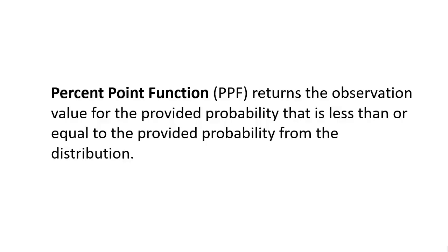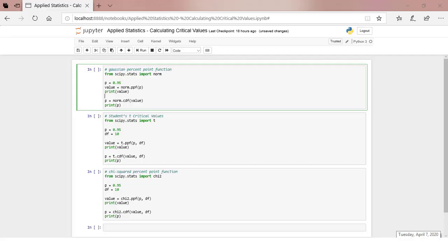A percent point function returns the observation value for the provided probability that is less than or equal to the provided probability from the distribution. A value from this distribution will be equal to or less than the value returned from the PPF with the specified probability. Let's work through three distributions which are commonly used to calculate critical values.